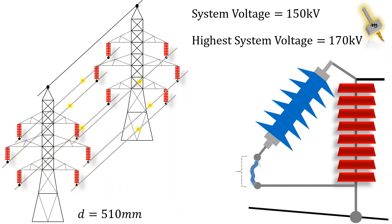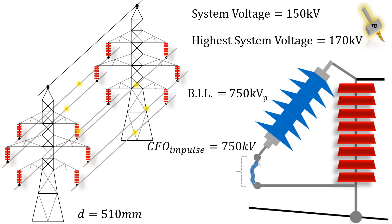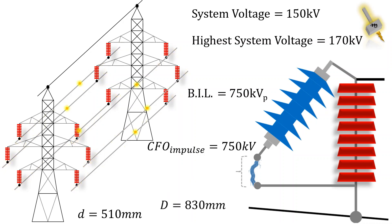For the same system, the BIL will be 750 KV peak. Considering a rod-rod electrode configuration, the gap factor will be 1.3. The maximum spark gap distance will be 830 mm.